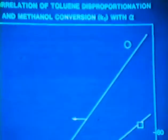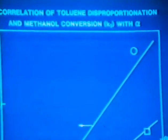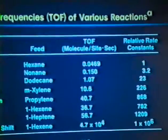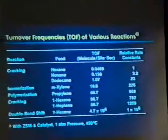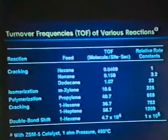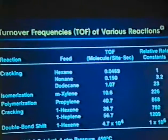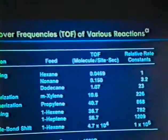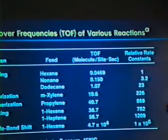However, if we have this beautiful set of data, we can determine the turnover frequencies. Relative rates. Now, often we hear that one says, this is an easy reaction. It requires weak acid sites. And we have more difficult reactions requiring strong acid sites. These are relative rates. All for the same kind of sites. And these are the absolute numbers.